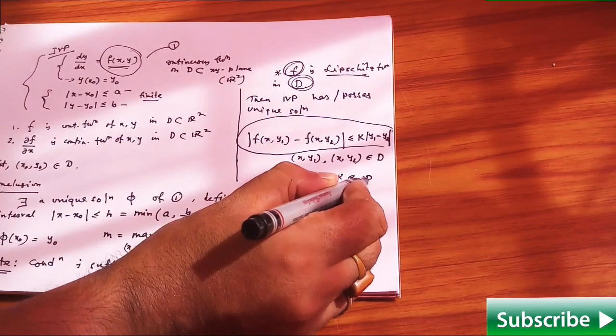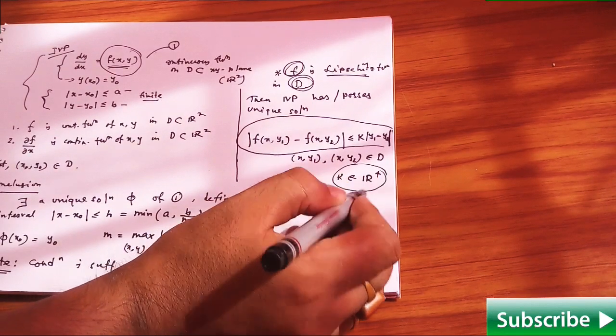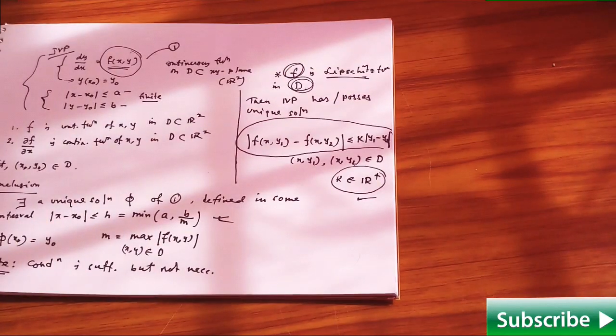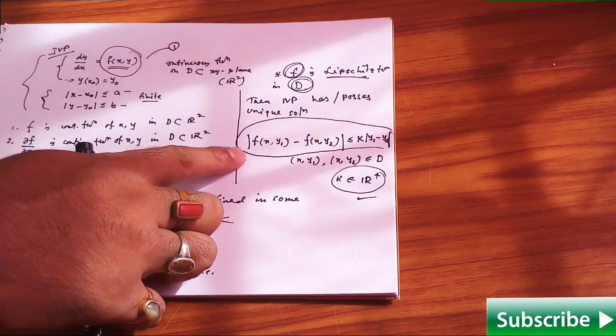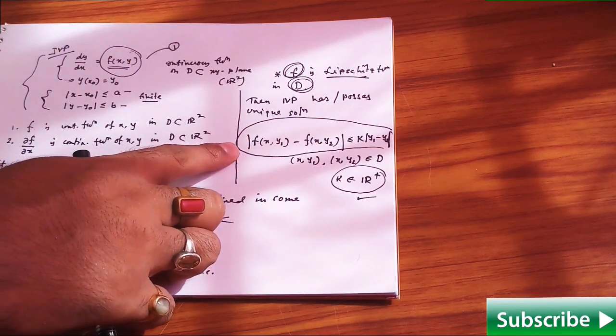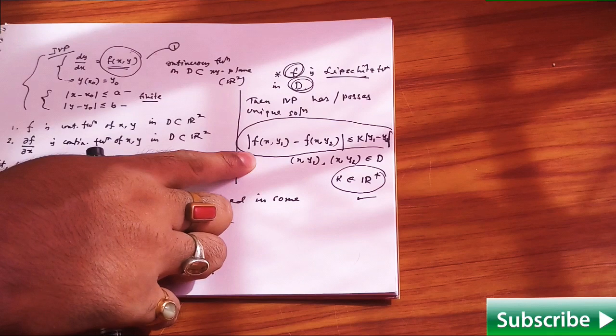This k actually belongs to R plus, meaning it's a positive constant. Whenever f satisfies this condition, then you will say f is a Lipschitz function or satisfies the Lipschitz condition.